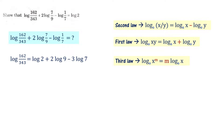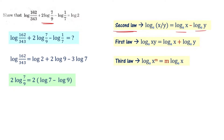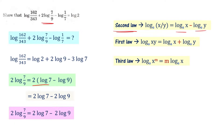Now simplify the second term: 2 times log of 7 by 9. Applying the second law, this is 2 times (log 7 minus log 9), which equals 2 log 7 minus 2 log 9. Now the third term: log of 1 by 7 equals log 1 minus log 7. Take note of all these simplified terms before substituting.